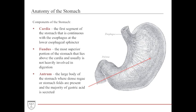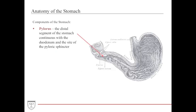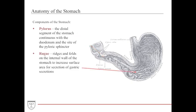The antrum has numerous dense rugae or stomach folds that aid the majority of gastric acid secretion. At the very distal end is the pylorus, which contains the pyloric sphincter and is continuous with the duodenum. These dense ridges and folds on the antrum increase the surface area for secretion of gastric juices.